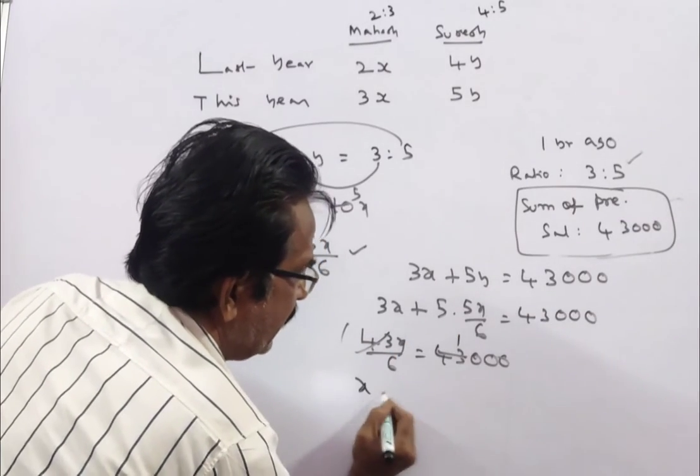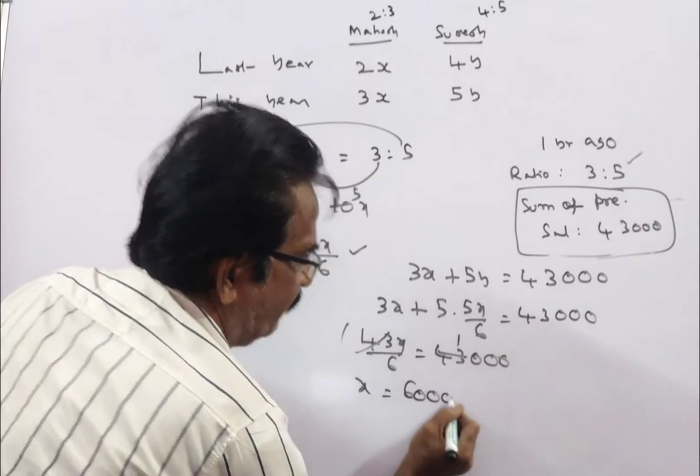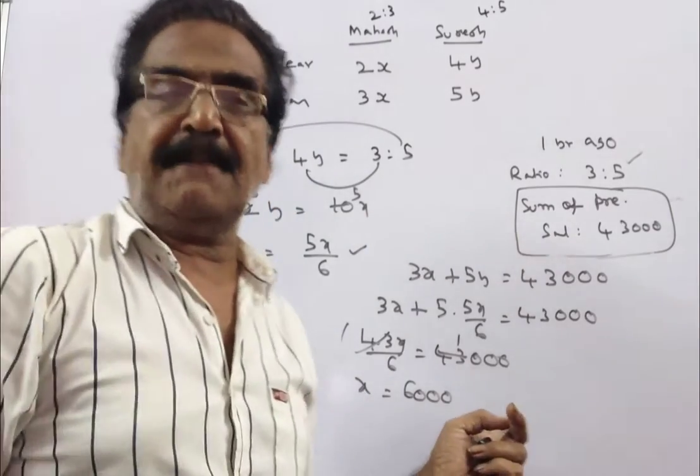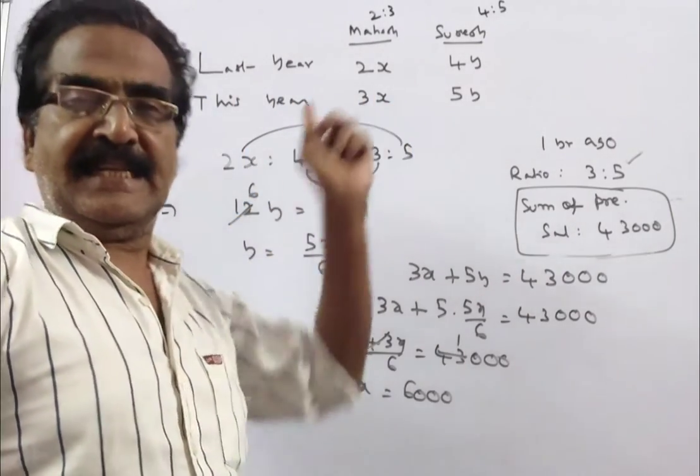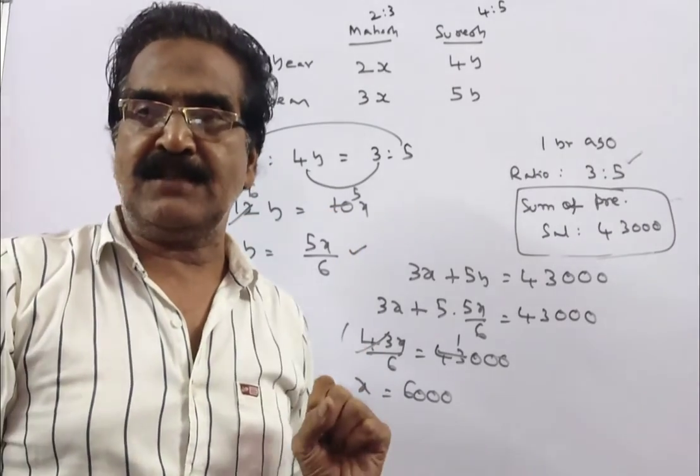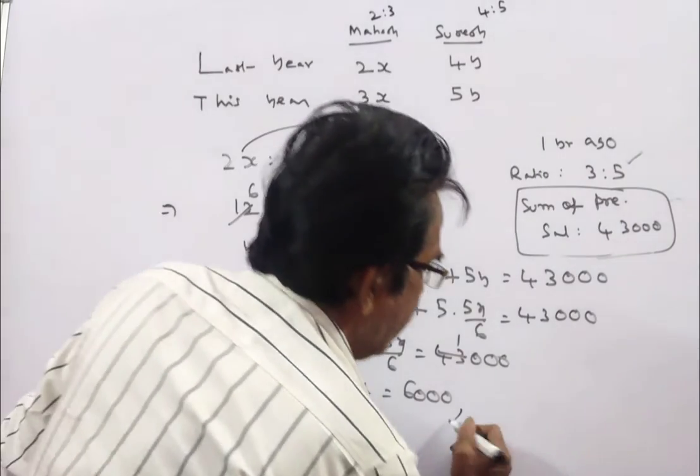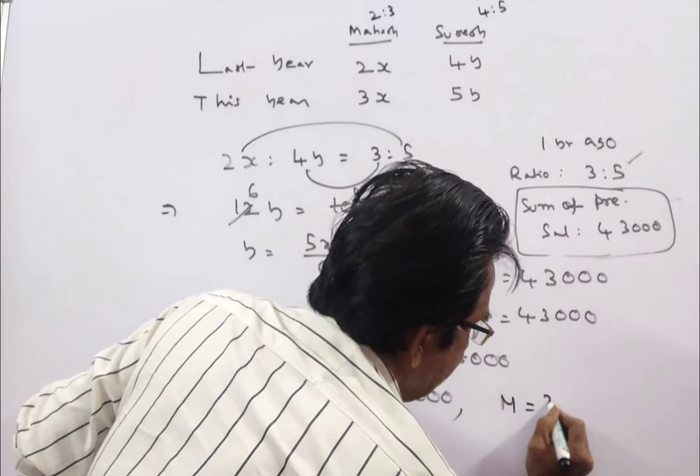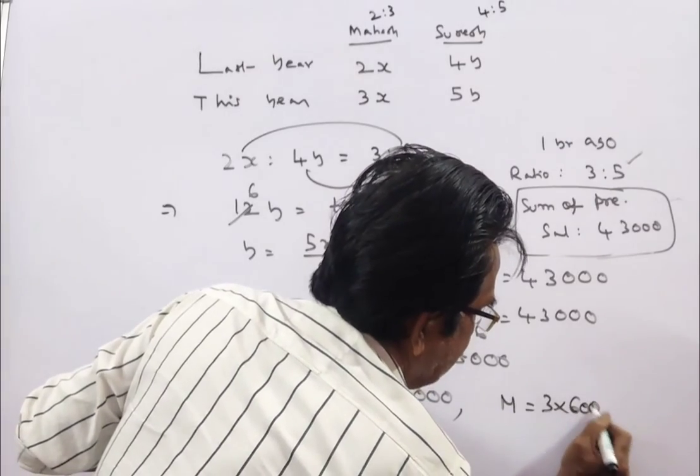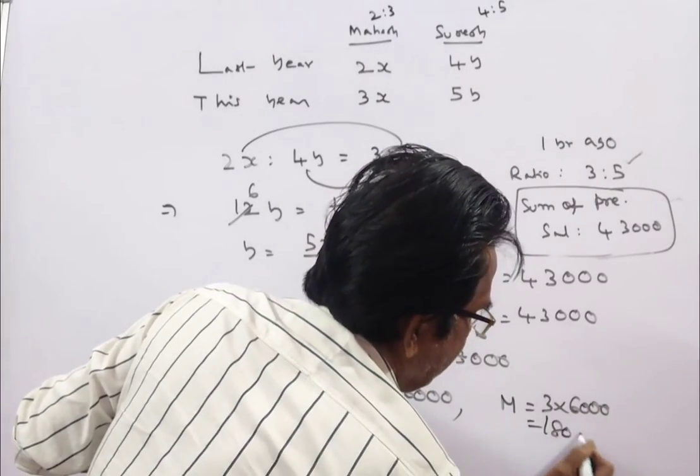x equals 6,000, so Mahesh's salary is 3x, which is 3 into 6,000, equals 18,000. Mahesh's salary is 18,000.